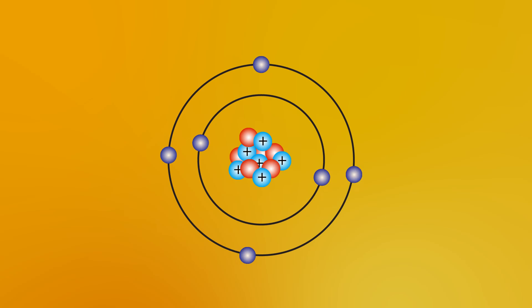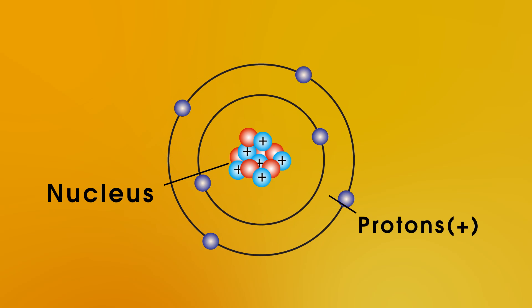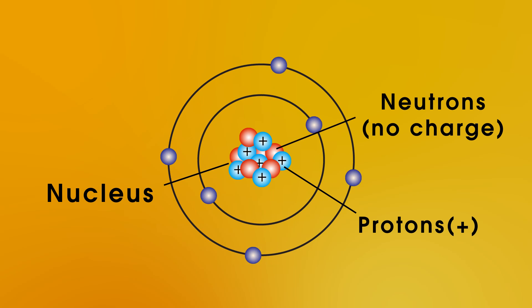On screen now is an atom of carbon. In the nucleus, the centre of the atom, we have protons and neutrons. Protons have a positive charge, and neutrons have no charge at all. Whizzing around the nucleus are electrons, and they have a negative charge. In an atom, there's the same number of protons as electrons, meaning an atom is neutral overall.